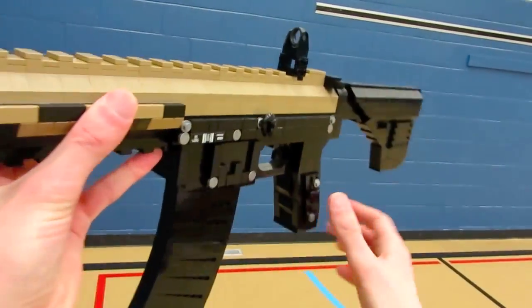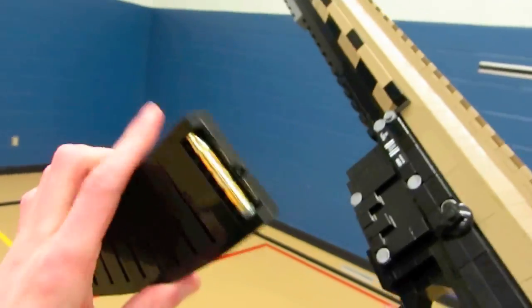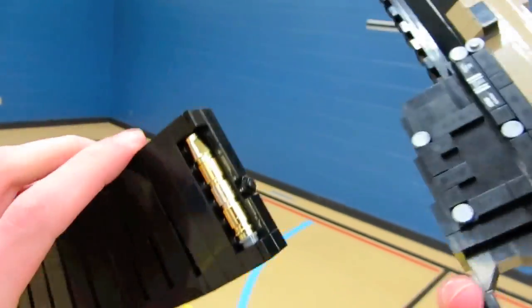It's got the M4 style lower receiver as well and this Lego Remington R5 assault rifle can be reloaded and also the magazine has the golden bullet.